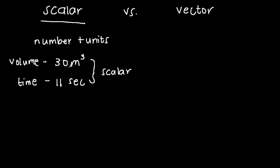If you say 30 cubic meters, 30 just means that we have 30 cubic meters for volume, and for time it's just 11 seconds. That's basically it. Remember, scalar is simply any number — the magnitude — plus its units.